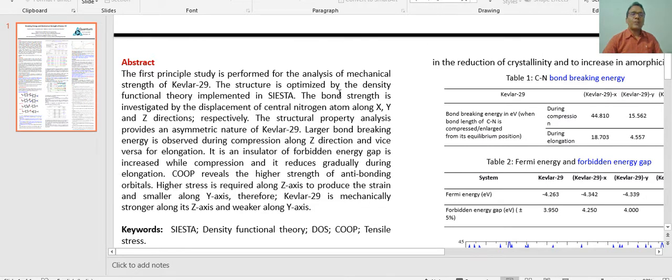This is a quantum chemistry-based software. The bond strength is investigated by the displacement of central nitrogen atom along X, Y, and Z direction respectively. The structural properties analysis provides this material as having anisotropic nature. The larger bond breaking energy is observed during compression along Z direction and lower energy is observed during elongation. It is an insulator as its forbidden energy gap is measured, and it is also shown that when the material is compressed, forbidden energy gap increases. This energy gap reduces gradually during elongation. We have also performed COOP analysis, which reveals the higher strength of anti-bonding orbitals.